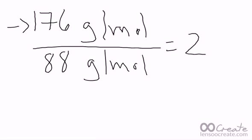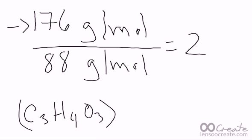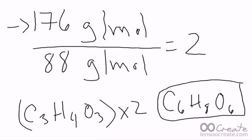Whatever that number is, you're going to go through and multiply the empirical formula by that number, and that will give you the molecular formula. So if I have C3H4O3, and I'm going to multiply that by 2, then I end up with C6H8O6. This would be my molecular formula, while the other one over here in parentheses is the empirical formula.